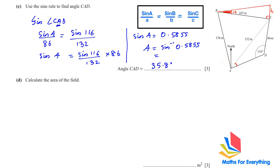Next, calculate the area of the field. We divide it into two triangles: triangle ABC and triangle CAD. We found angle BAC = 42.1 degrees in part B, and angle CAD = 35.8 degrees now. To find the third angle in triangle CAD, we subtract from 180: 180 − 116 − 35.8 = 28.2 degrees.